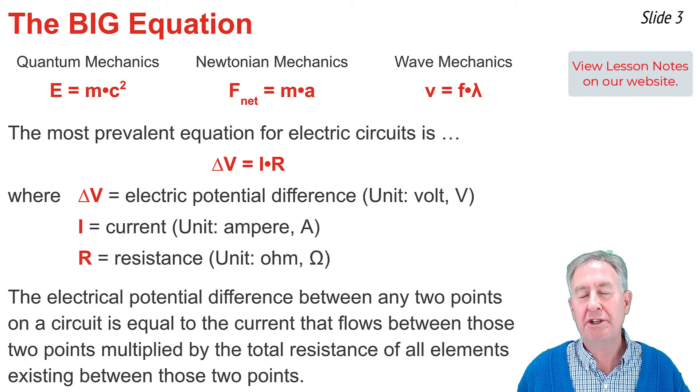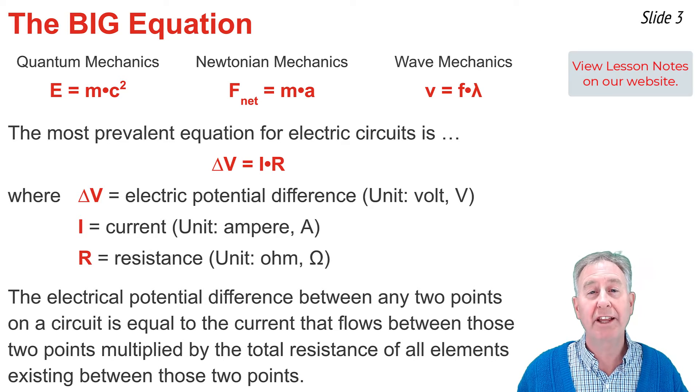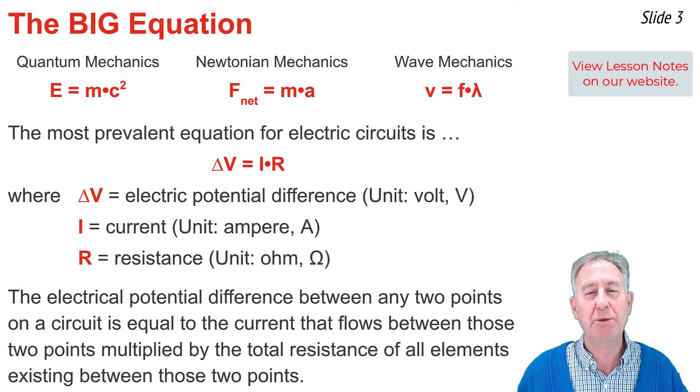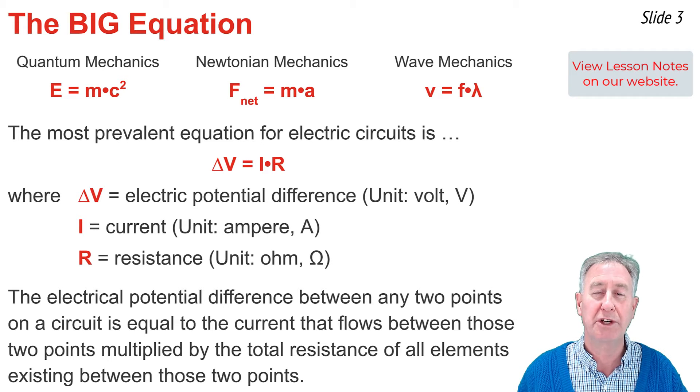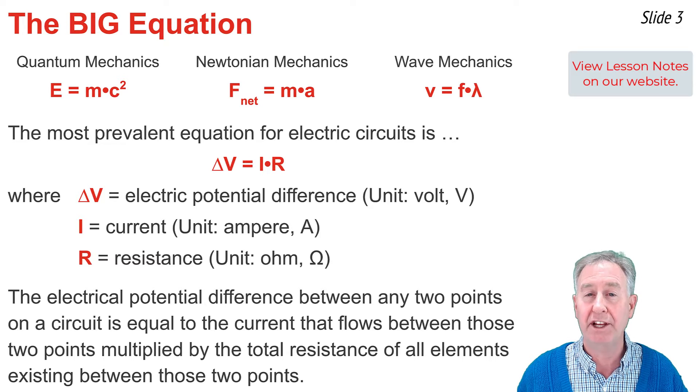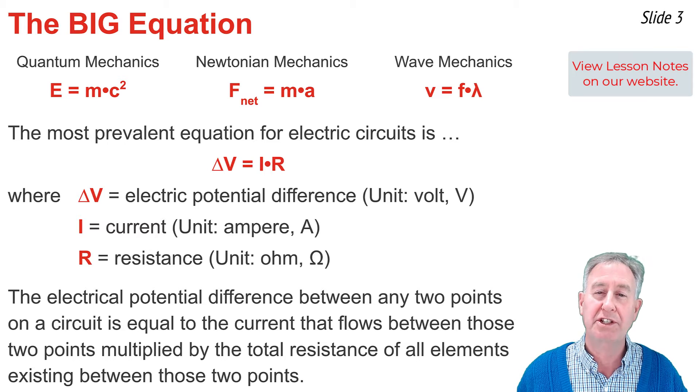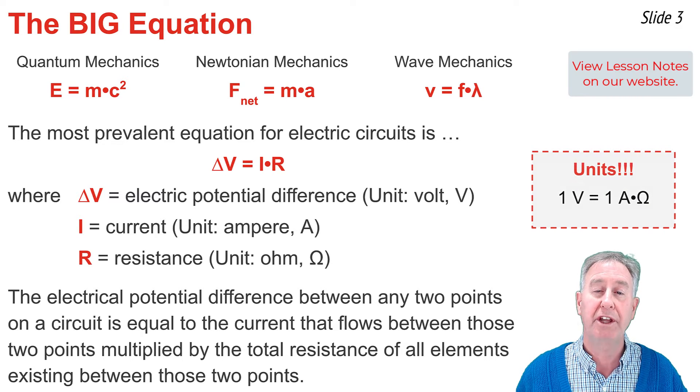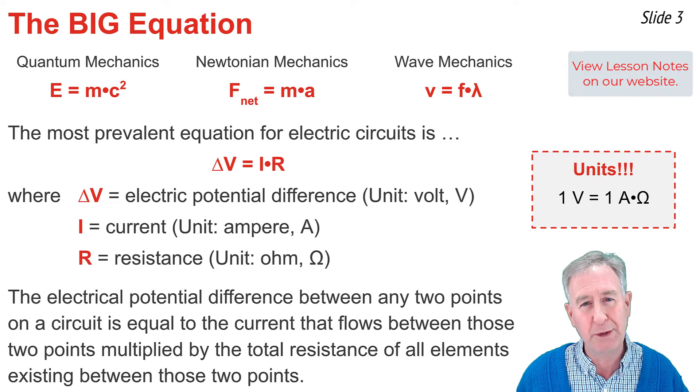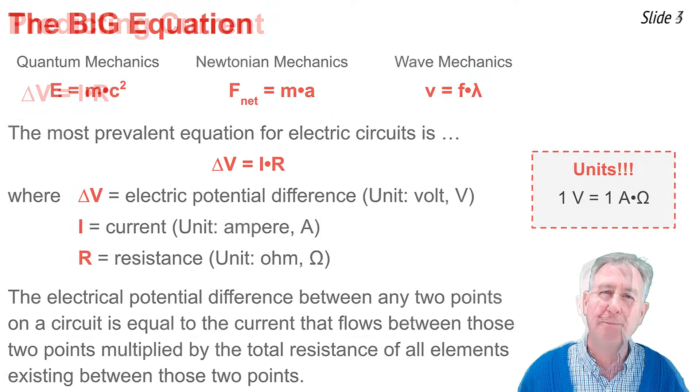This equation could be described as saying that the electric potential difference between any two points on the circuit equals the current that flows between those two points multiplied by the total resistance of all devices existing between those two points. As with any equation in physics, it's important to give attention to the units: the volt, the amp, and the ohm. These three units are related by the unit equivalency 1 volt equals 1 amp times ohm.